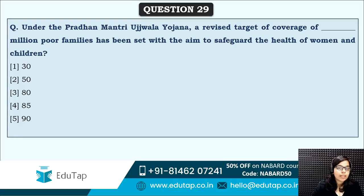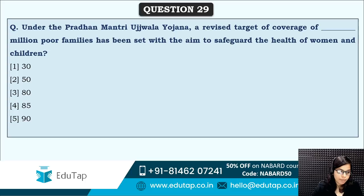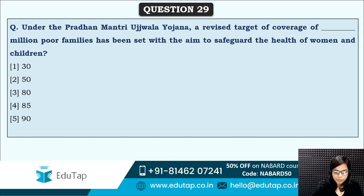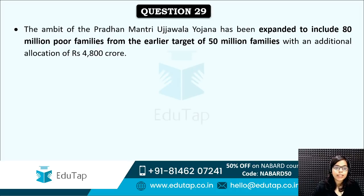Next: under Pradhan Mantri Ujjwala Yojana, a revised target of coverage of how many million poor families has been set up to safeguard the health of women and children? This target has been revised recently, which makes it more important. The new target is 80 million poor families — earlier it was 50 million, now changed to 80 million.